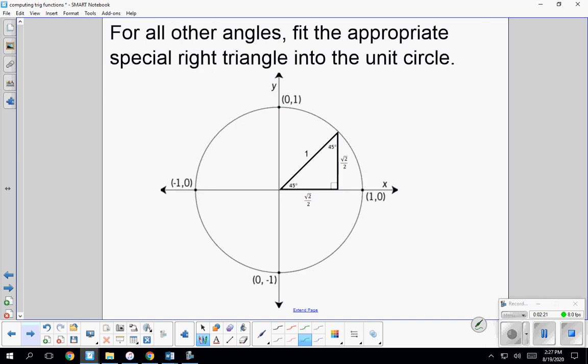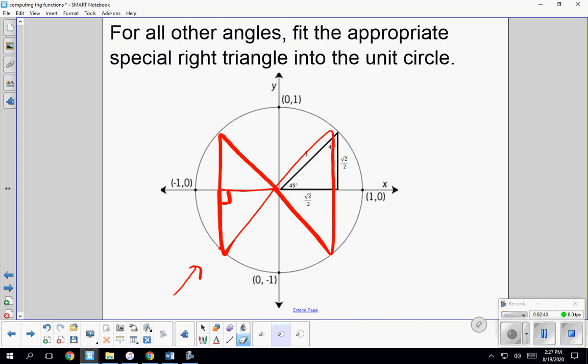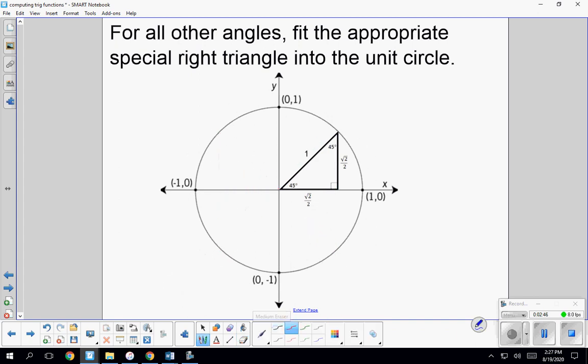For everything else, you're going to want to fit an appropriate special right triangle. And it's really important that you understand the way we fit these in is that our reference angle has to go right here at the origin. So any triangle you fit in here has to make this bow tie shape. If you fit a triangle into quadrant three, the right angle has to be away from the origin. So please don't try to be using special right triangles like this. That is not going to give you the right answer.